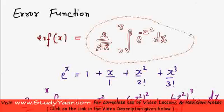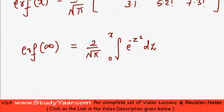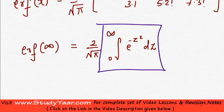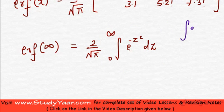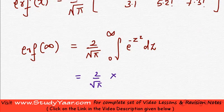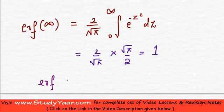You have the definition of error function, and over here instead of x, I am going to have infinity. I know this integral — this is the Gaussian integral. You know that the integral of e raised to power minus x squared from 0 to infinity dx is equal to root pi upon 2. So this is equal to 2 upon root pi into root pi upon 2, which is equal to 1. So your error function of infinity is equal to 1.